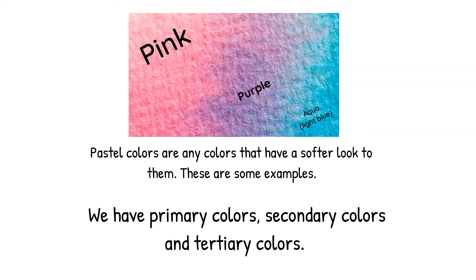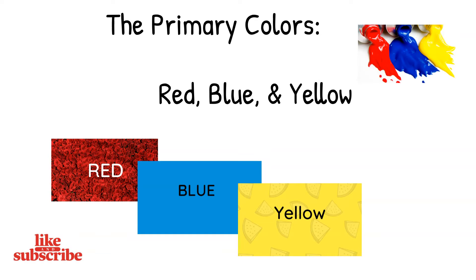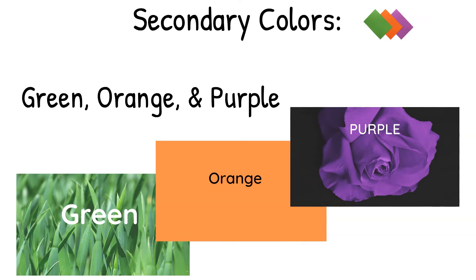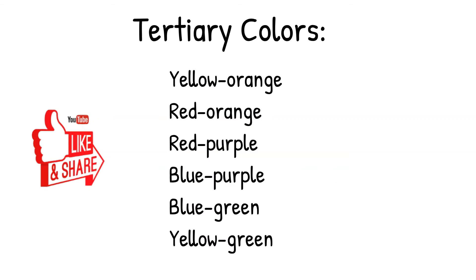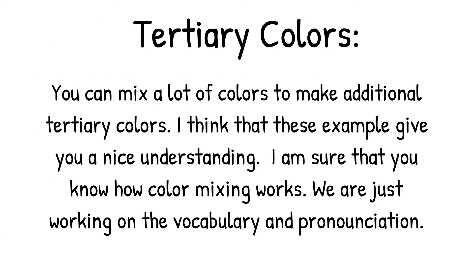Now we're going to talk about primary colors, secondary colors, and tertiary colors. Primary colors are red, blue, and yellow. Secondary colors are green, orange, and purple. Tertiary colors: yellow-orange, red-orange, red-purple, blue-purple, blue-green, yellow-green. You can mix a lot of colors to make additional tertiary colors. I think that these examples will give you a nice understanding. We're just working on vocabulary and pronunciation.